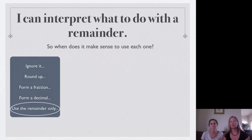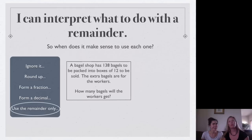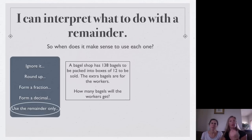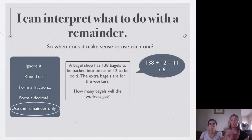And then the last one is use the remainder only, which, you know, we were talking, that seems really strange. But if you read the question, sometimes the questions will ask you for what is left over. And that is the remainder. So, a bagel shop has 138 bagels to be packed into boxes of 12 to be sold. The extra bagels are for the workers. So, in this case, the extra bagels are those that are left over. So, how many bagels will each worker get? So, in that case, it's actually referring to what's left over for those workers.